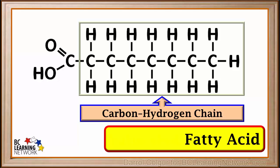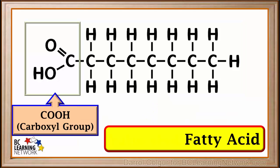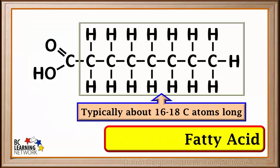A fatty acid consists of a long chain of carbon and hydrogen atoms, and a COOH or carboxyl group on the end. A carboxyl group has a double bonded oxygen atom and an OH group attached to a carbon atom. In most cells, the fatty acid chains are typically about 16 to 18 carbon atoms long, but shorter ones do occur. We are representing a shorter one here so it fits better into our video frame. Just remember, they are usually longer in most common fats.